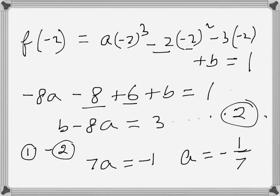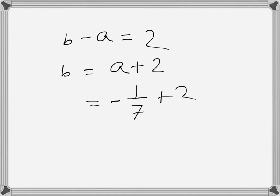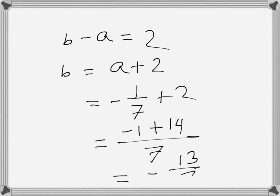Substituting a = -1/7 into b - a = 2: b = a + 2 = -1/7 + 2 = (-1 + 14)/7 = 13/7. So b = 13/7, which can be written as 1 and 6/7.